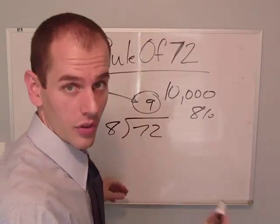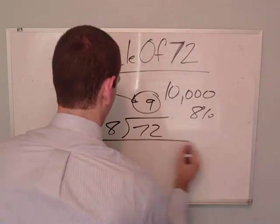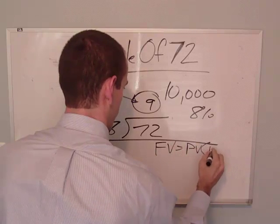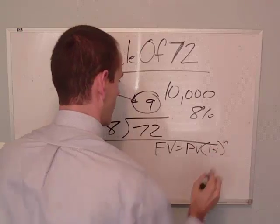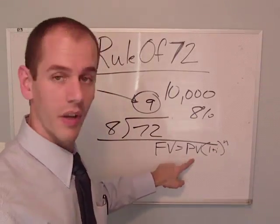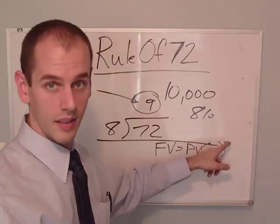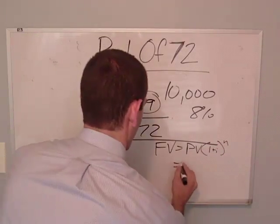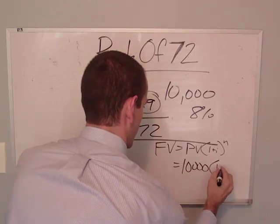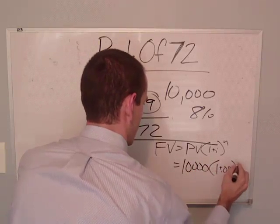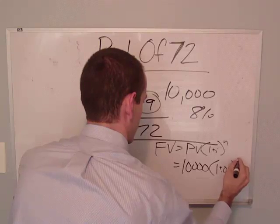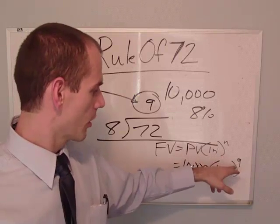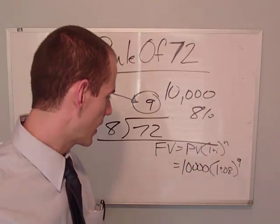And you can check it using the compound interest formula. So here's the compound interest formula. Future value equals present value times 1 plus i to the number of periods. So if we plug in 1.08 to the 9th power and multiply that by 10,000,